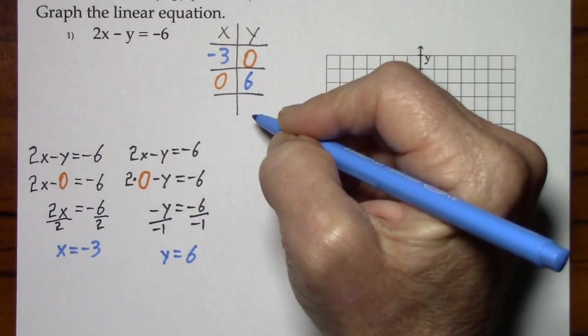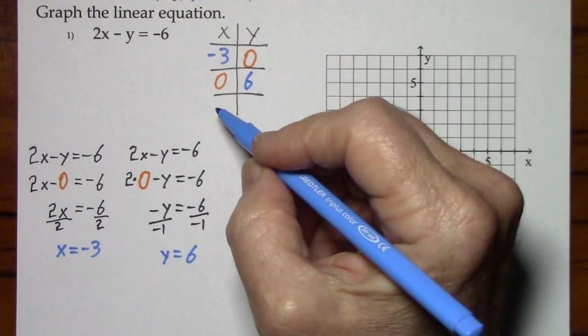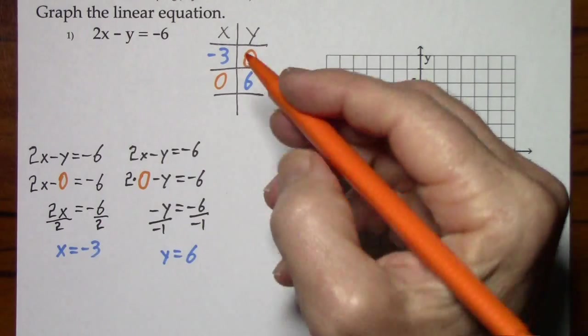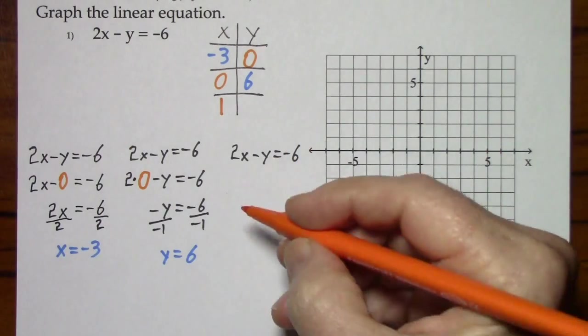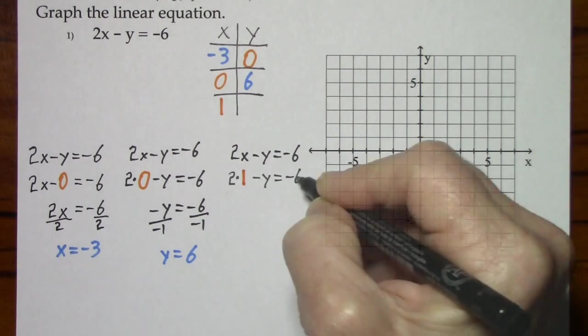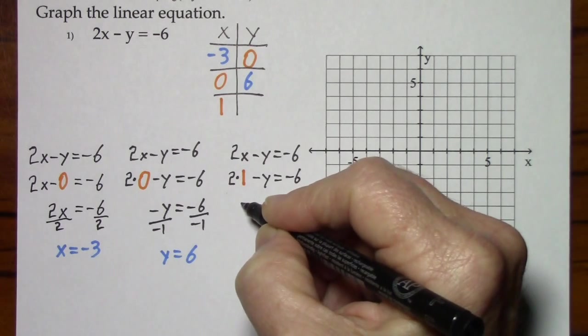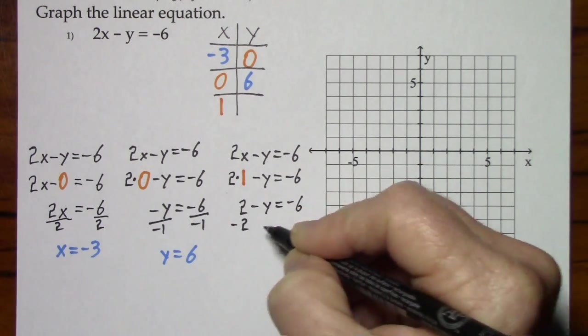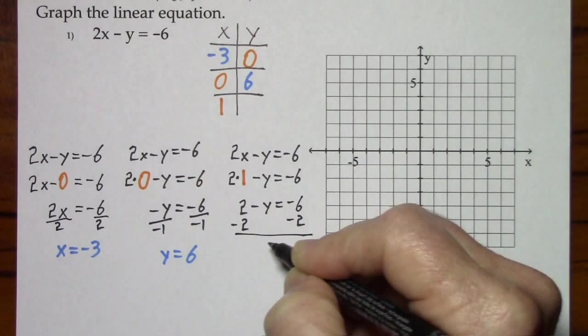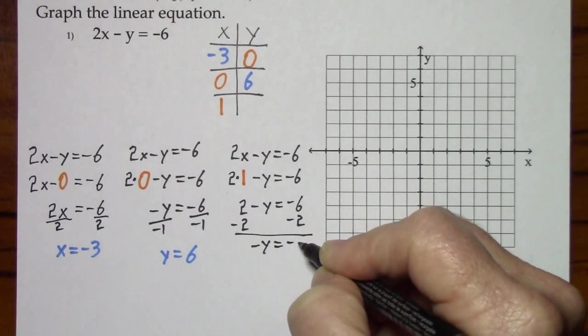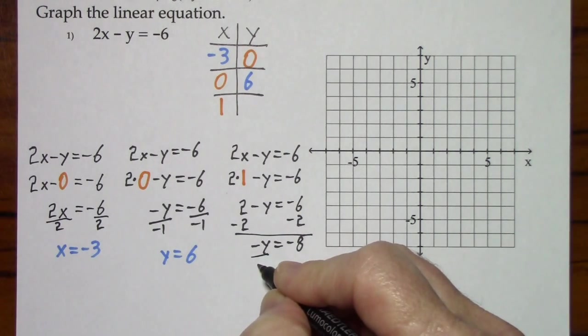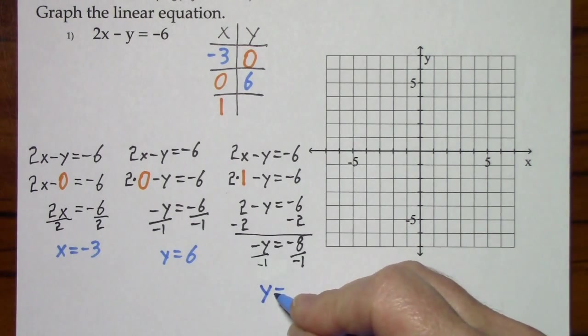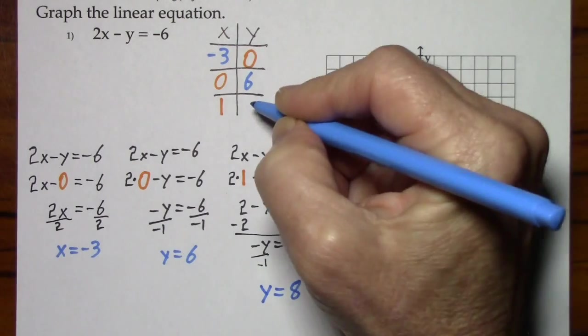We have two ordered pairs. I'm going to find a third ordered pair. That is, I'll pick a value for x and see what y is. Let's say x is 1. And then we'll add the third ordered pair.